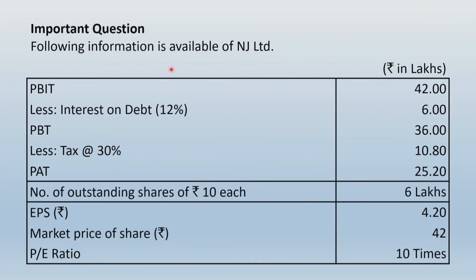The following information is available for NJ Limited, with all figures in rupees lakhs. PBIT (profit before interest and tax) is given as 42 lakhs. Interest on debt at 12% is given as 6 lakhs — this implies the value of debt is 6 lakhs divided by 12%, giving 50 lakhs. Profit before tax is PBIT minus interest; less tax at 30% gives profit after tax. Number of shares outstanding is 6 lakh shares at face value rupees 10 each, resulting in EPS of 4.2. Market price per share is 42, and the PE ratio is 10 times.